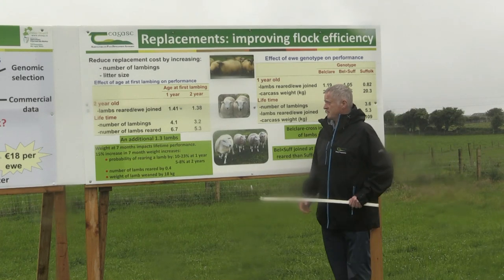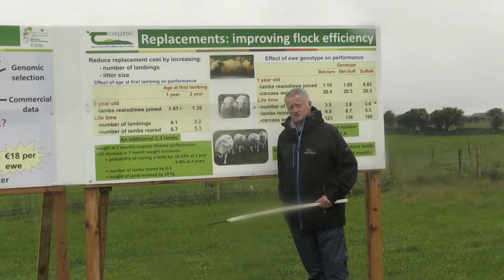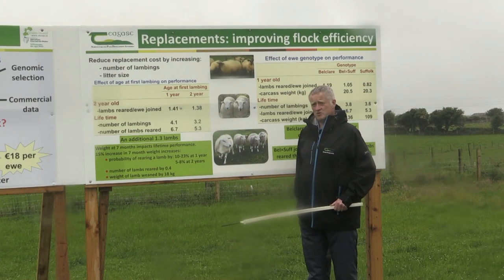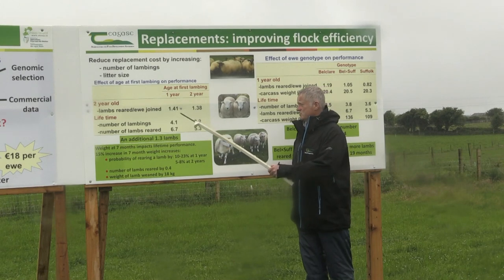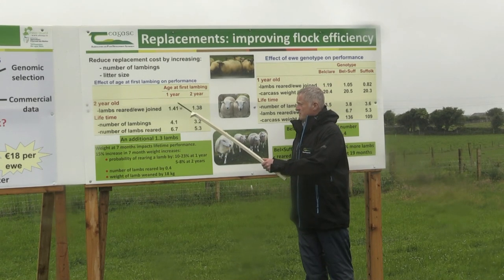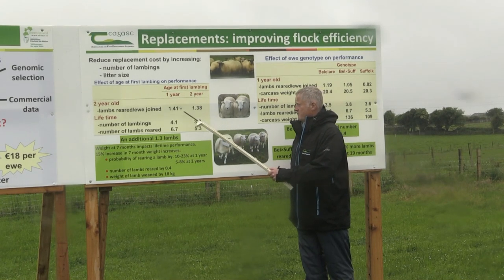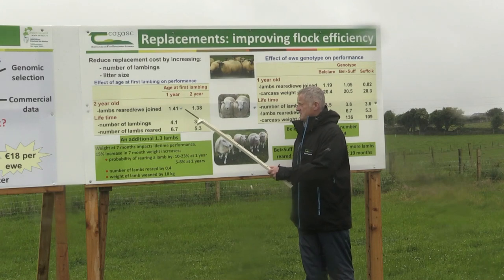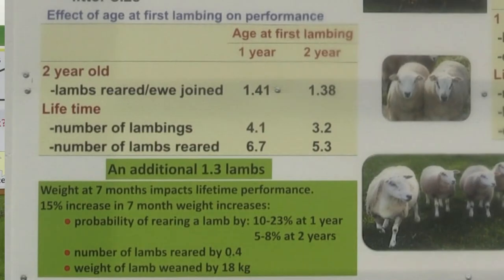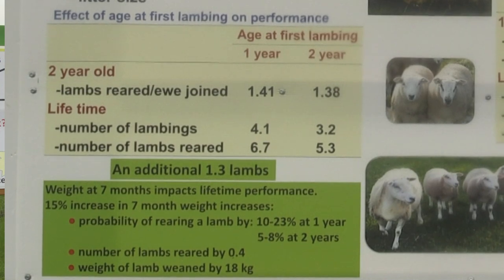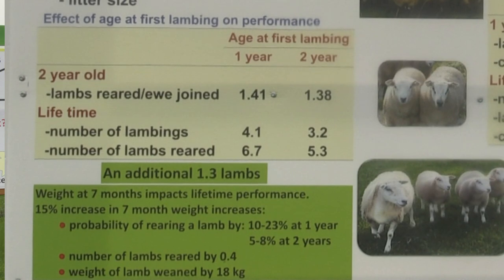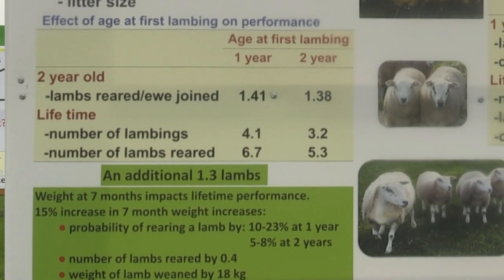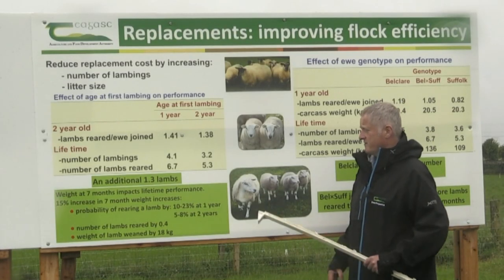The second thing we looked at was age at first lambing. People often ask: if you lamb at one year of age, what impact does it have on performance when lambing at two years of age? We found that whether ewes lambed for the first time as a ewe lamb or as a hogget, there was no difference in their two-year-old performance in terms of lambs reared per ewe joined. Over the lifetime, those that lambed at one year of age produced an extra 0.9 lambings and an extra 1.3 lambs relative to those that lambed for the first time as hoggets.